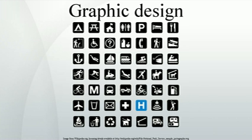The following years saw graphic design in the modern style gain widespread acceptance and application. A booming post-World War II American economy established a greater need for graphic design, mainly advertising and packaging. The immigration of the German Bauhaus School of Design to Chicago in 1937 brought a mass-produced minimalism to America, sparking a wildfire of modern architecture and design. Notable names in mid-century modern design include Adrian Frutiger, designer of the typefaces Univers and Frutiger, and Paul Rand, who from the late 1930s until his death in 1996 took the principles of the Bauhaus and applied them to popular advertising and logo design, helping to create a uniquely American approach to European minimalism while becoming one of the principal pioneers of corporate identity.